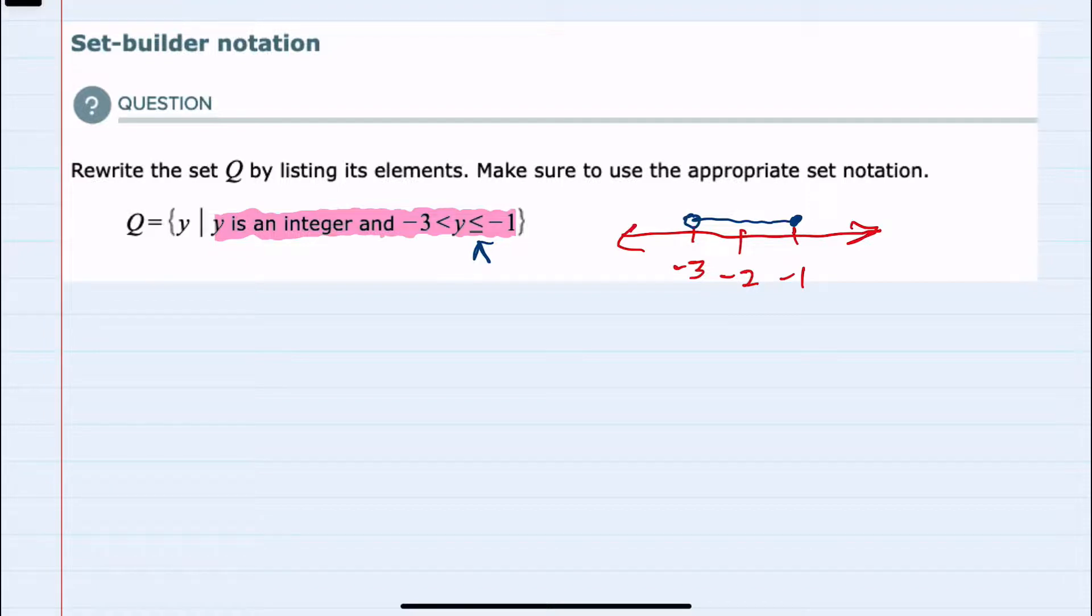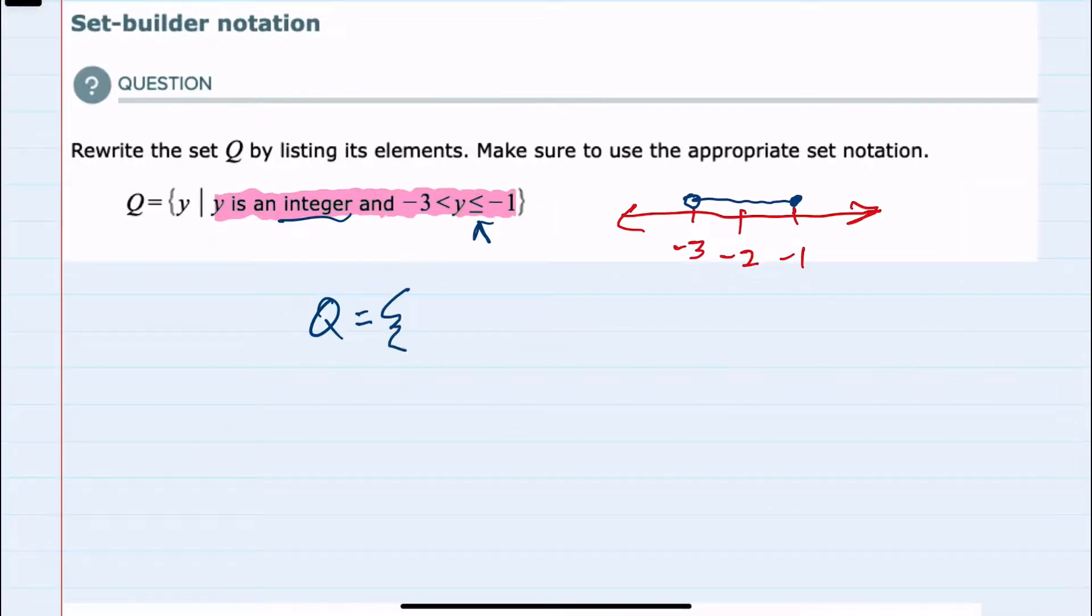And since we know that Q is an integer, then writing it as a list, the integers that fall in this range: negative 3 would not be included because it does not have the equal sign, but I would include negative 2, and I would include negative 1 as integers.